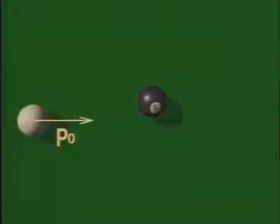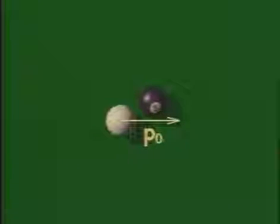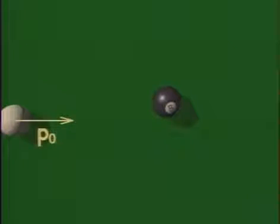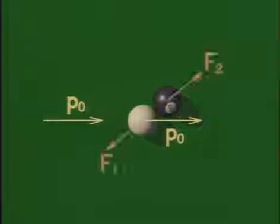After the interaction, each ball has some momentum, P1 and P2. According to the law of conservation of momentum, P0, the initial momentum, is equal to the final momentum, P1 plus P2.